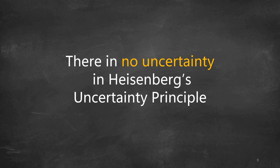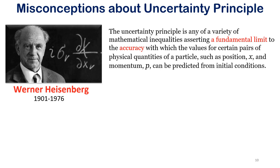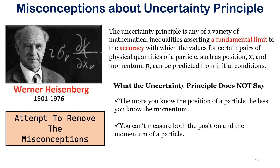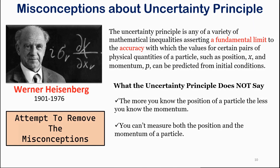Let us understand the real meaning of the uncertainty principle. The Wikipedia definition tells that the uncertainty principle is a variety of mathematical inequalities asserting a fundamental limit to the accuracy with which the values for certain pairs of physical quantities of a particle — such as position and momentum — can be predicted from initial conditions. So it puts up a fundamental limit. What the uncertainty principle actually does not say is that the more you know the position the less you know the momentum, or that you cannot measure both the position and momentum of a particle — these are not right.